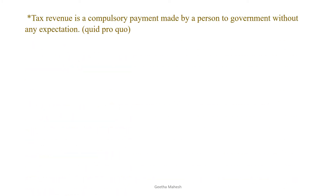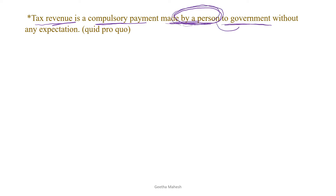Tax revenue is the first thing to understand. What is tax revenue? Tax revenue is a compulsory payment made by a person to the government. It is a compulsory payment — customers must pay for income. This is tax revenue.